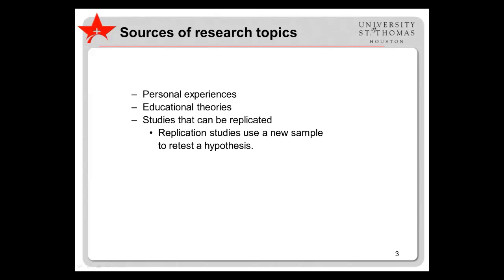Various educational theories are another good source, as many theories are multifaceted and can be investigated with new populations or under new circumstances. An underutilized source of research topics is existing research studies. Many researchers are hesitant to replicate existing studies because of a belief that this is less important or useful. However, replication is essential for having confidence in research results.